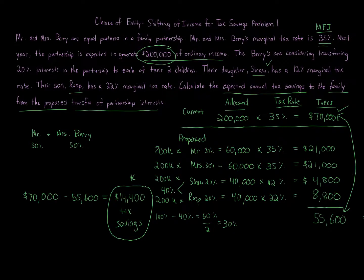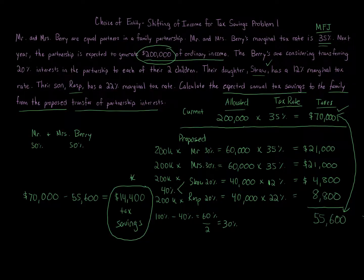As the children get older, they'll likely move into higher marginal tax brackets, so these savings may not last forever — Straw and Rasp might eventually rise to the 35% bracket or higher. So this plan is ultimately more about family and business succession planning: Mr. and Mrs. Berry want to transfer the business to their children as they approach retirement, not just about the current income tax savings.